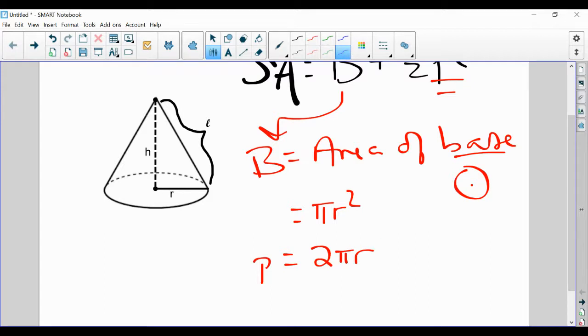And L, this is where things get a little different. L is the slant height of the cone. That is different from the height of the cone, which goes from the center of the base up to this point up here called the apex.